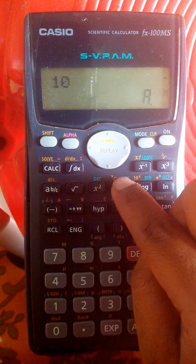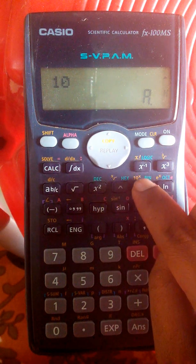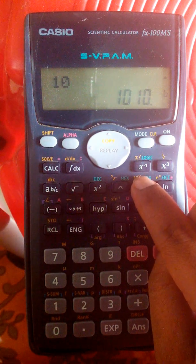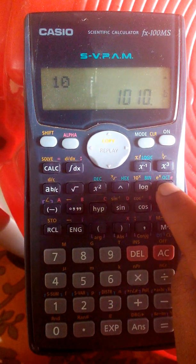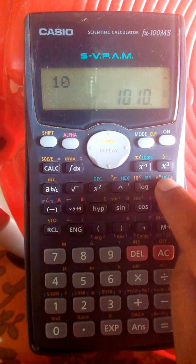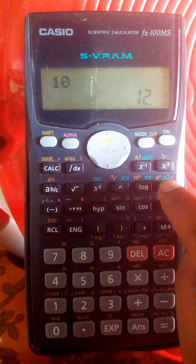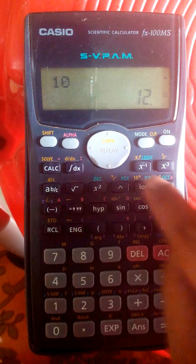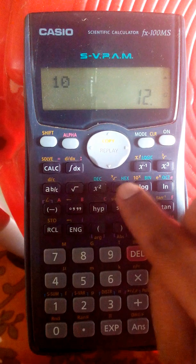Now press binary, so the binary equivalent is 1010. Then the side button, which is OCT, press the OCT button. So the octal equivalent of 10 is 12. This is how we can convert using the calculator.